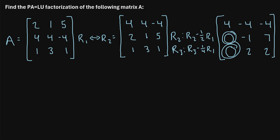We now have zeros in both target positions. When we write the L matrix, the values in the lower left corner will be the opposite of the row operations performed. So the position corresponding to the negative one-half row operation will hold a one-half in L, and the position corresponding to the negative one-fourth row operation will hold a one-fourth. We write these values inside those zero positions to remind ourselves what goes in the final L matrix.